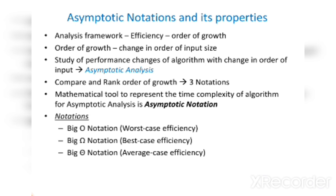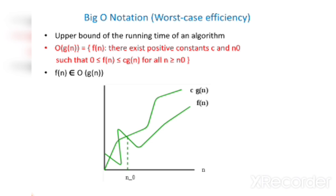Big O notation represents the worst case efficiency and the upper bound of the running time of an algorithm. The formula of Big O notation is: O(g(n)) = f(n) such that there exist positive constants c and n₀ such that 0 ≤ f(n) ≤ c·g(n) for all n ≥ n₀.